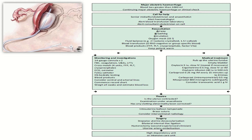When we have major obstetric hemorrhage with blood loss greater than 1000 ml and continuing major obstetric hemorrhage or clinical shock, the first step in PPH management is to call for help. The team would include the senior midwife, obstetrician, and anesthetist.